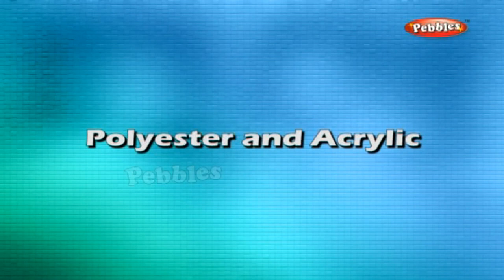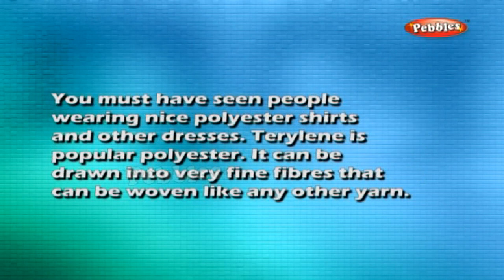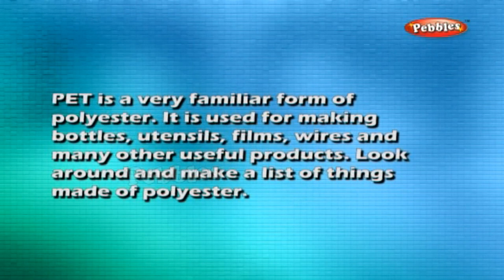Polyester and acrylic: polyester is a synthetic fiber. Fabric made from polyester does not get wrinkled easily, remains crisp, and is easy to wash, making it suitable for dress material. Terylene is a popular polyester that can be drawn into very fine fibers and woven like any other yarn. PET (polyethylene terephthalate) is a very familiar form of polyester used for making bottles, utensils, films, wires, and many other useful products.